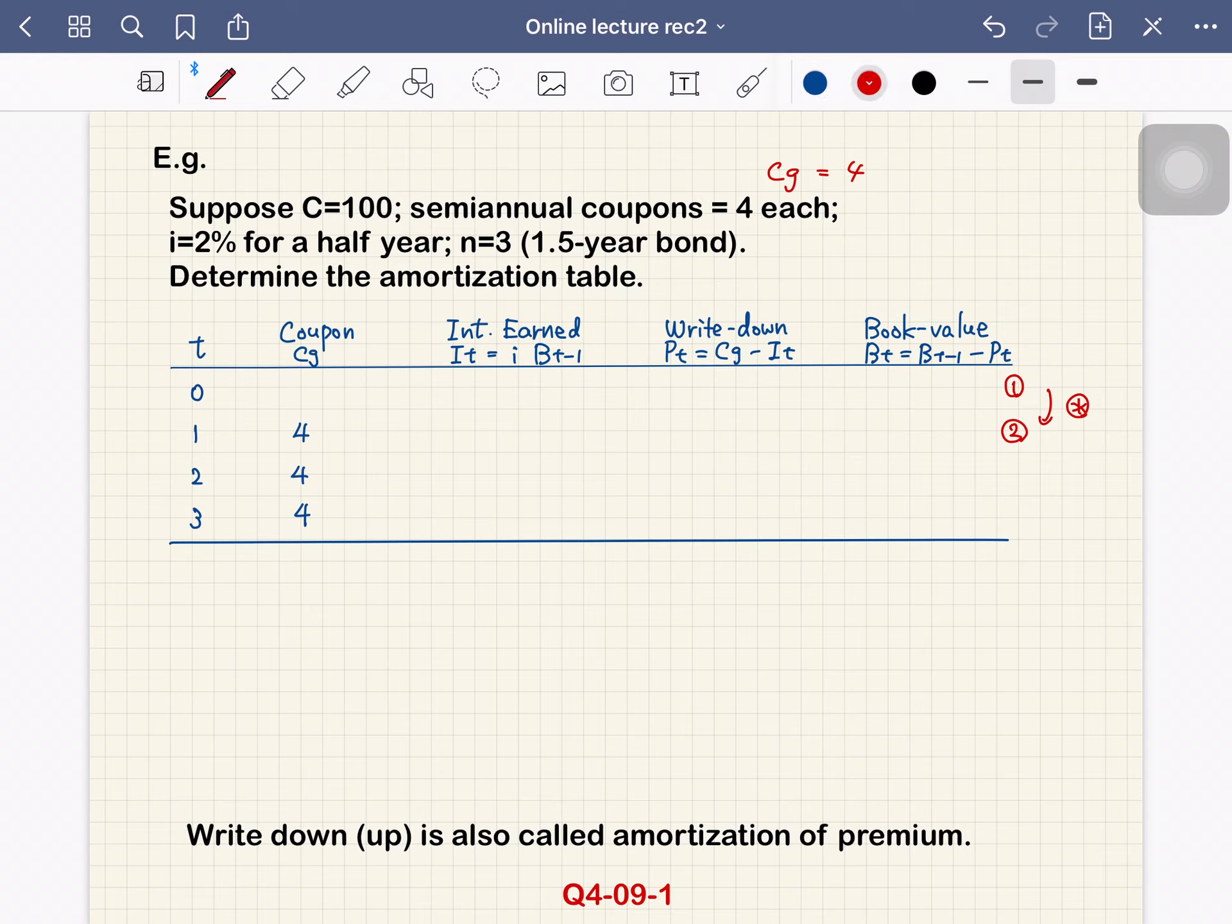We want to determine B0 by the price formula. Cg times A angle n, 3 at 2%, plus C times v to the power n.